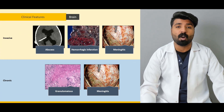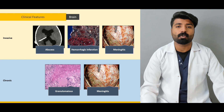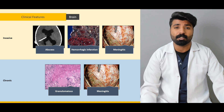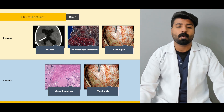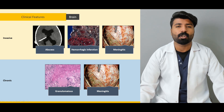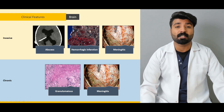Next, we're going to talk about the clinical features affecting different organs that are the primary targets of aspergillosis. We'll cover the brain — including how brain abscesses are formed, hemorrhage, vascular dysfunction, meningitis, granulomatosis, and chronic forms of CNS involvement.